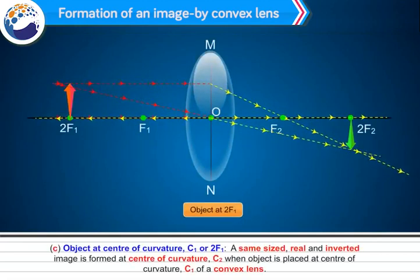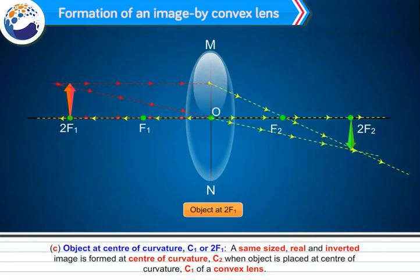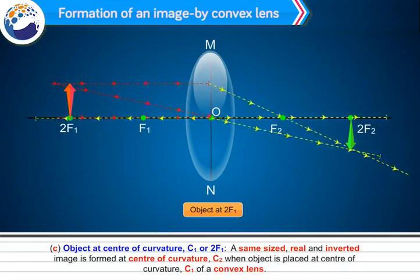When the object is placed at the centre of curvature C1 (or 2f1) of a convex lens, a same-sized, real and inverted image is formed at the centre of curvature C2.